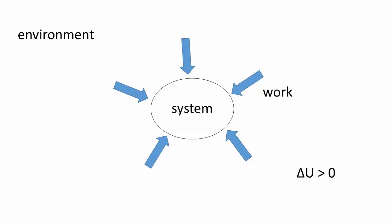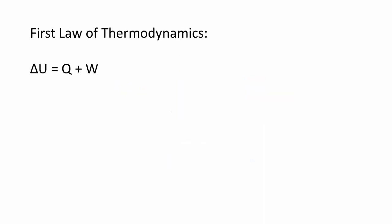Energy can be gained in the form of heat and later lost in the form of work. Putting this all together, we come up with the mathematical expression for the first law of thermodynamics: the internal energy of a system, delta U, is equal to Q plus W.